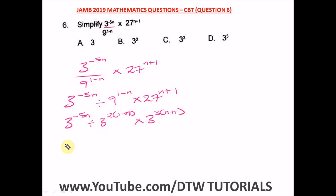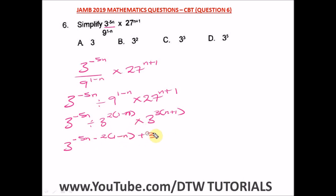From here, remember that with a division sign in indices, it becomes a subtraction sign. So we have three raised to the power: four minus five n, minus two times bracket one minus n, plus three times bracket n plus one.